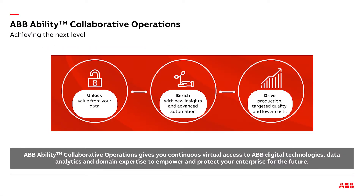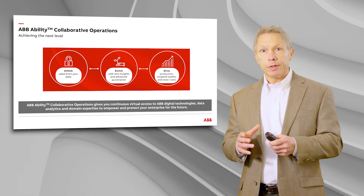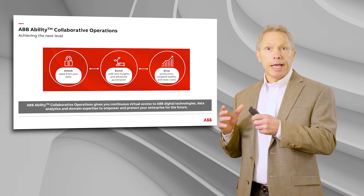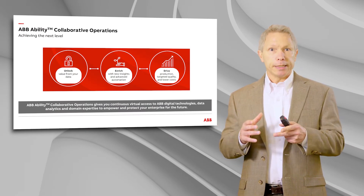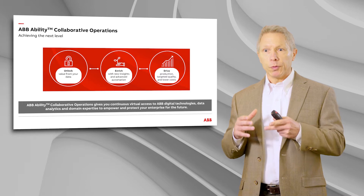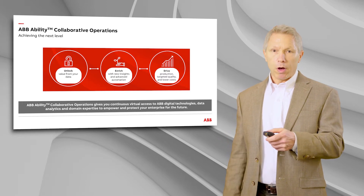The second part of ABB Ability Collaborative Operations is the way that we collect data, pull it into our Ability system, and then create knowledge from that — by leveraging the technology and the data. The third part is to leverage expertise to get some action from that data, either through people or through automation.